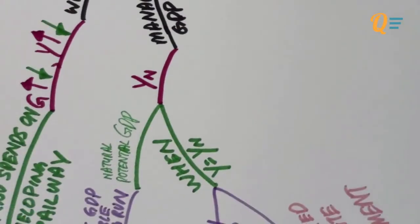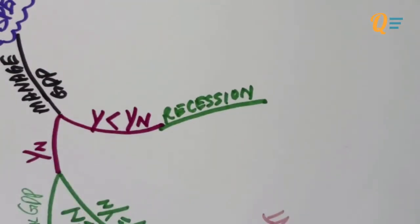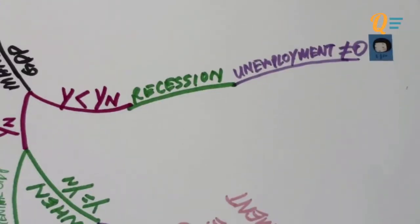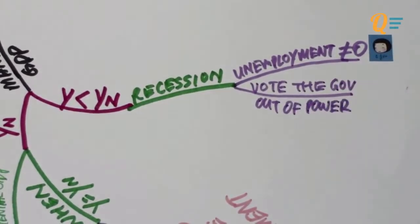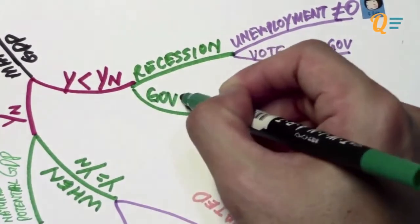Why does the government need to manage GDP? In a scenario where GDP is less than the potential level, this is known as a recession. The reason it's in a recession is probably because there is unemployment, and when there's unemployment, people are unhappy. When people are unhappy, they will vote the government out of power. There are two things the government hates — recession and inflation — because when the people don't like it, they'll vote the government out. So the government needs to increase GDP to the potential level using fiscal policies.